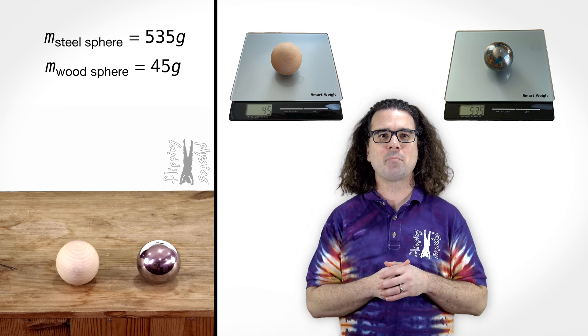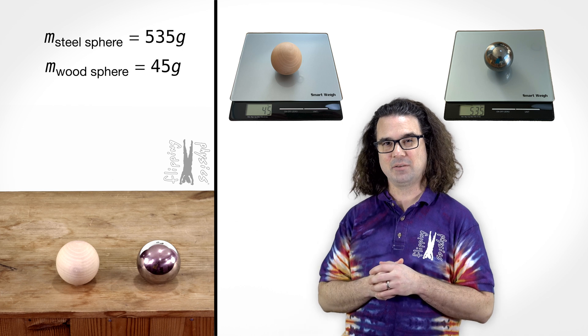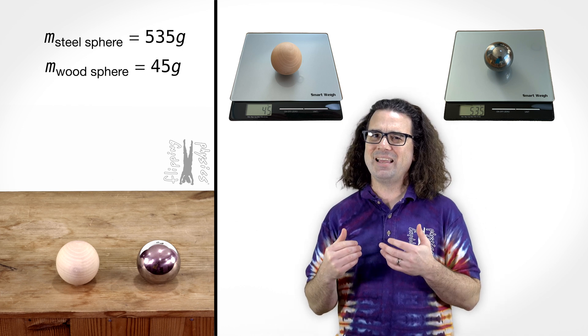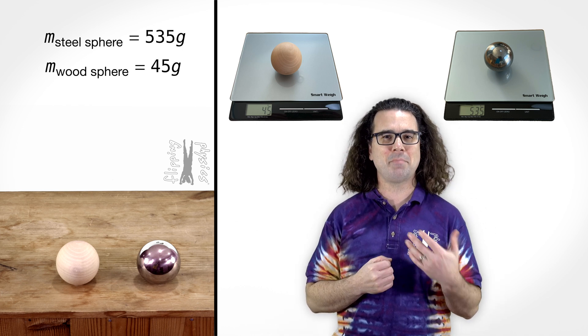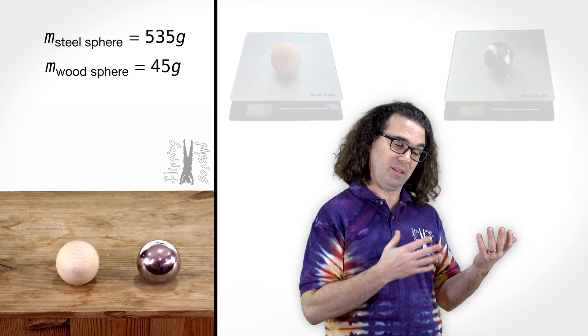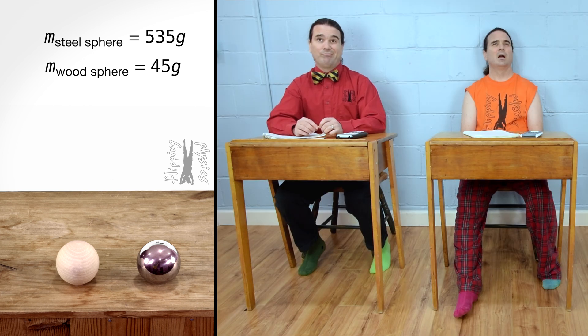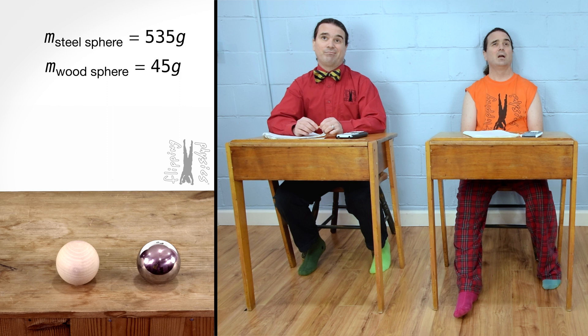Typically, people tend to think of steel as being more massive than wood, which, as Billy pointed out, is impossible to know without knowing the sizes of the objects.